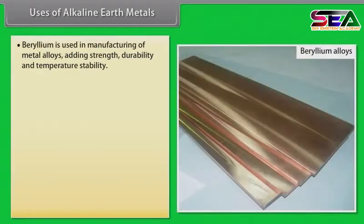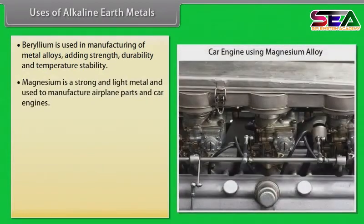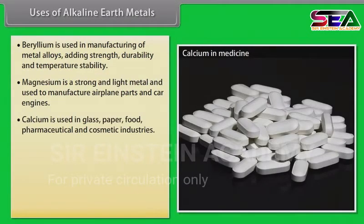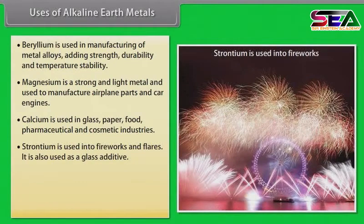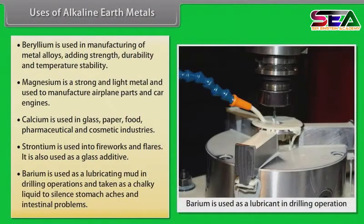Beryllium is used in manufacturing of metal alloys, adding strength, durability and temperature stability. Magnesium is a strong and light metal used to manufacture airplane parts and car engines. Calcium is used in glass, paper, food, pharmaceutical and cosmetic industries. Strontium is used in fireworks and flares and as a glass additive. Barium is used as lubricating mud in drill operations and taken as a chalky liquid to treat stomach aches and intestinal problems.